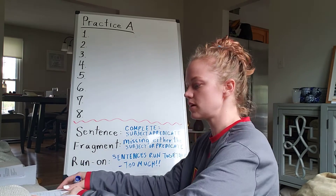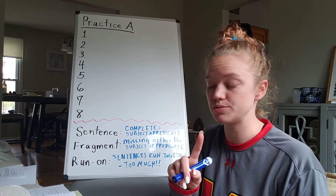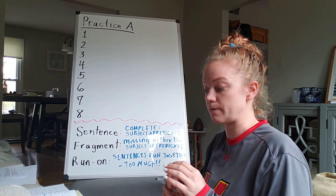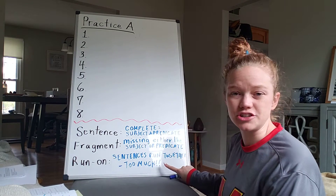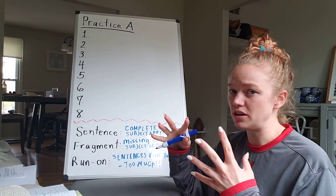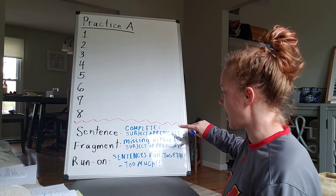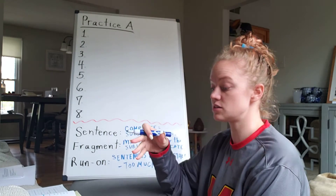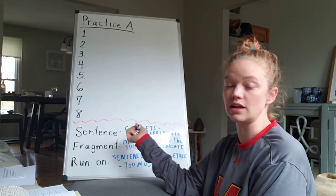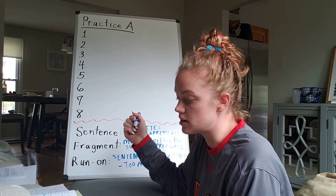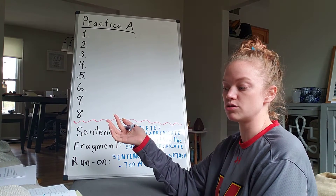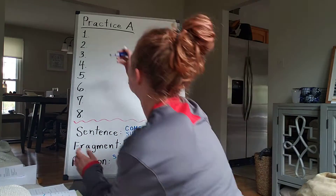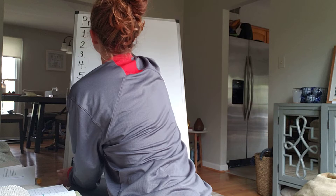Number one, practice A — I'm still on page 32. Number one: Lane Smith is an illustrator. Now, this doesn't feel like too much. I'm only given that one little thought, but do I have both subject and predicate? Lane Smith is an illustrator. I've got Lane Smith, who's my subject — that's who this sentence is about — is an illustrator. I'm talking about being something that she is. This would be a sentence. So number one is a sentence.